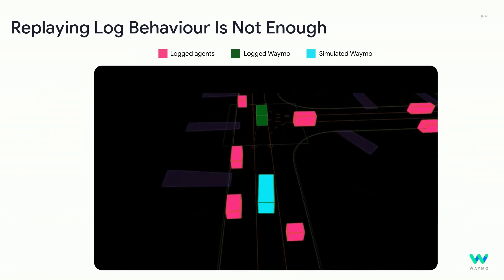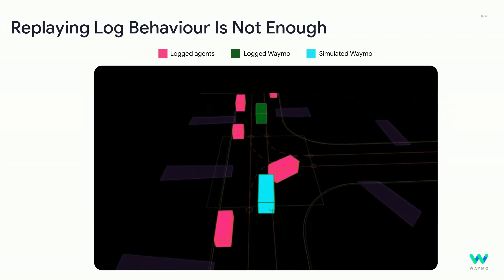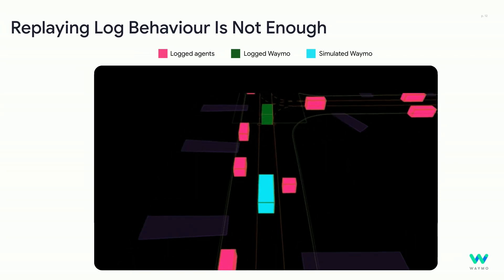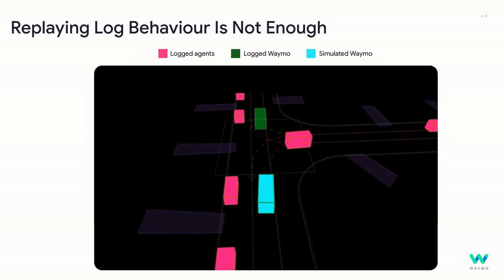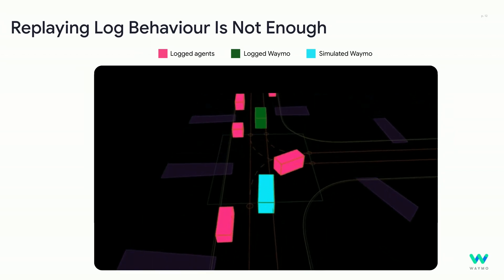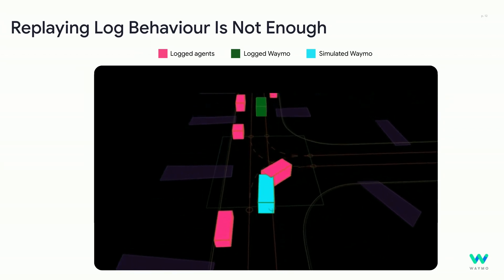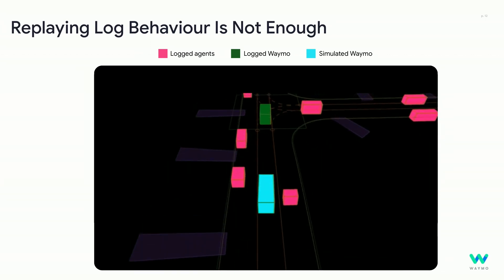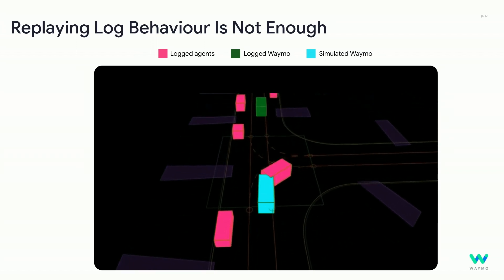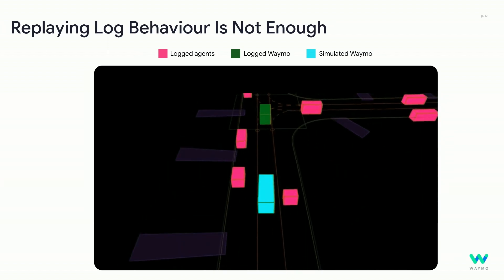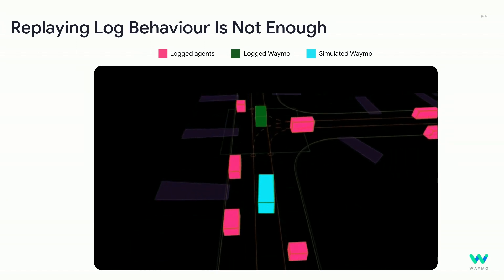A naive approach to modeling the other agents would be to just replay each agent's log behavior. The example shown makes clear why this is inadequate. The real-world driver was in the state represented by the green box when it observed objects in the pink boxes. The simulated behavior of a new software version is shown in blue — it performed slightly different actions, causing it to arrive at the intersection slightly later. Because the agent coming from the right is just replaying the log, it doesn't react to the changed behavior of our driver, and its left turn, which was innocuous in the real world, becomes a simulated but unrealistic collision. To do better, we need these agents to react realistically, requiring closed-loop control policies learned via imitation.